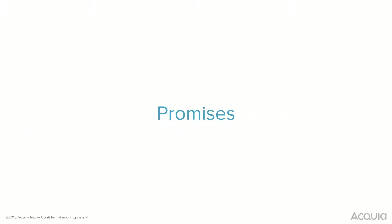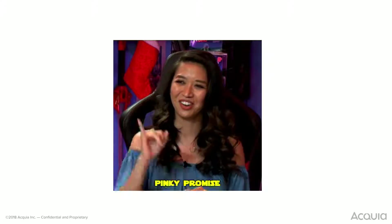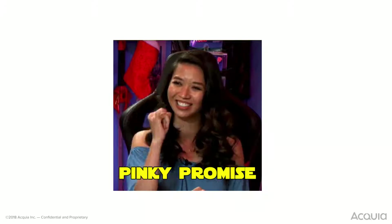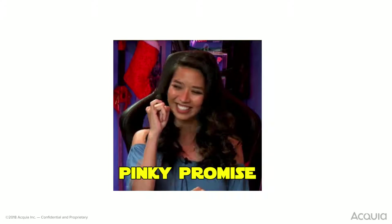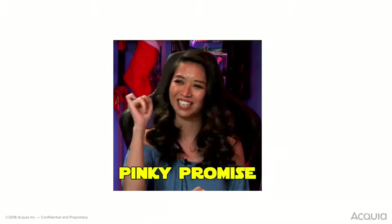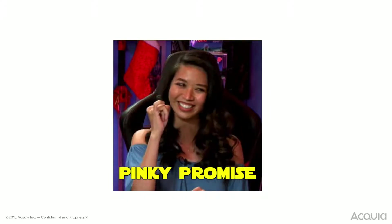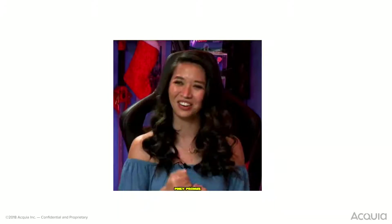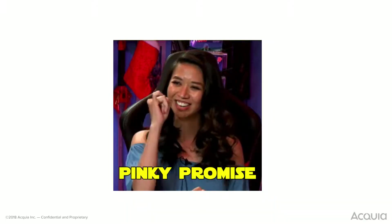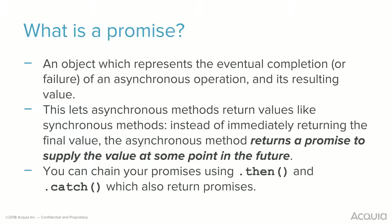Promises. I'll take this section — I've done a lot with promises in asynchronous JavaScript. Can I get a quick show of hands of who's actually worked with promises in JavaScript before? About half. So, what is a promise? A promise is an object that represents the eventual completion or failure of an asynchronous operation and its resulting value.